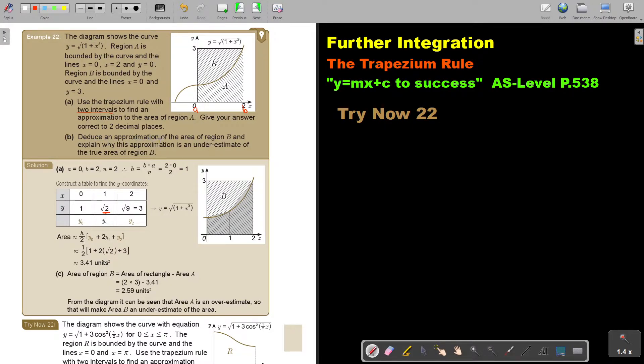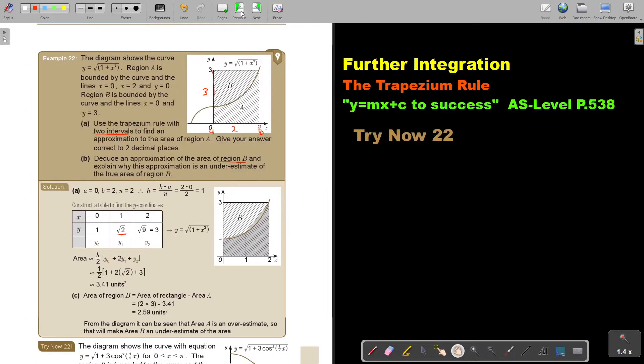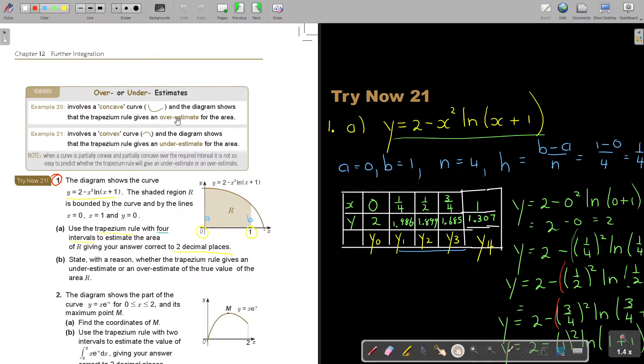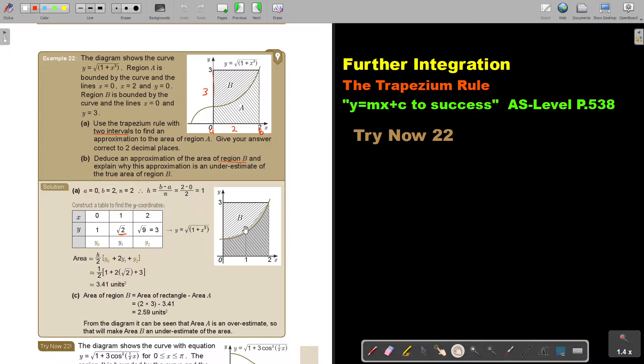Now let's deduce an approximation of the area of B and explain why this approximation is an underestimate of the true region of B. Now remember there you have your rectangle. Do you see? So the area of the rectangle is just 2 times 3. And I subtract this one and I get this. But now if I look at area A, this was a concave. And a concave is an overestimate. This A was overestimated, so it's cutting into B. And that is why from the diagram, it can be seen that area A is an overestimate, which will make area B an underestimate of the area.